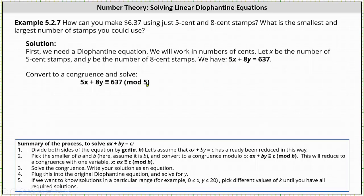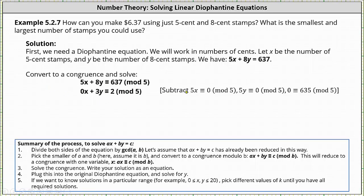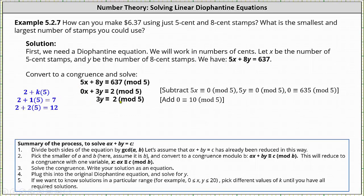Because we have mod five, we can add and subtract multiples of five. Because five x is congruent to zero mod five, we can subtract five x from five x, which gives us zero x. Because five y is congruent to zero mod five, we can subtract five y from eight y, which gives us three y. And because zero is congruent to 635 mod five, we can subtract 635 from 637, which gives us two. Simplifying, the x term drops out and we have three y is congruent to two mod five.